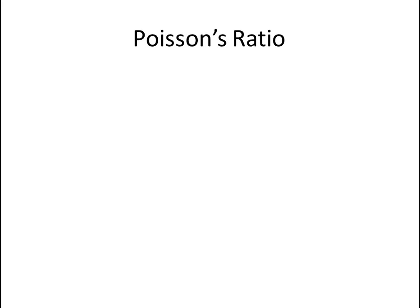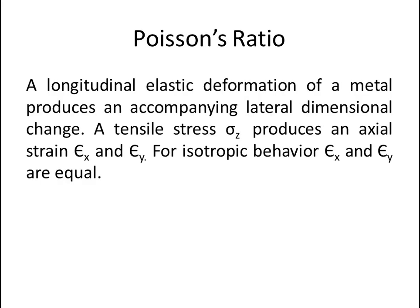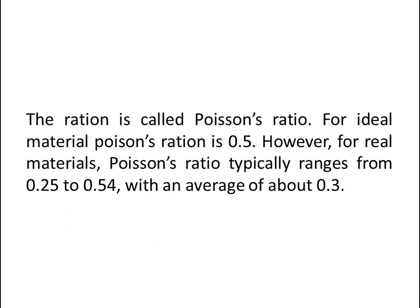Now let's talk about Poisson's ratio. A longitudinal elastic deformation of a metal produces an accompanying lateral dimensional change. A tensile stress produces an axial strain eta-x and lateral strain eta-y. For isotropic behavior, eta-x and eta-y are equal. Poisson's ratio is equal to lateral strain divided by longitudinal strain. For an ideal material, Poisson's ratio is 0.5. However, for real materials, Poisson's ratio typically ranges from 0.25 to 0.35 with an average of about 0.3.